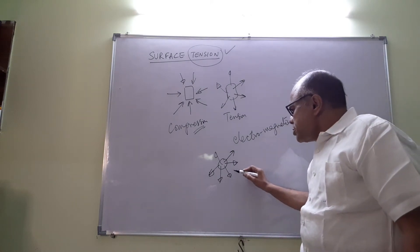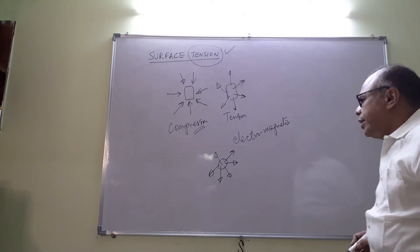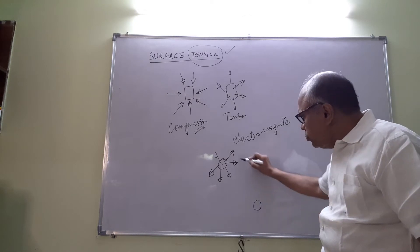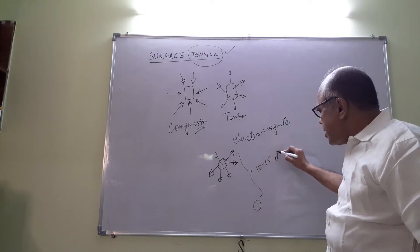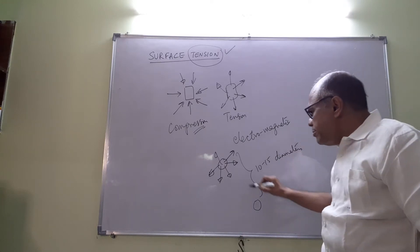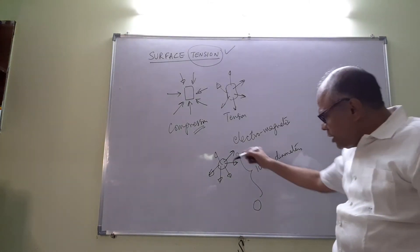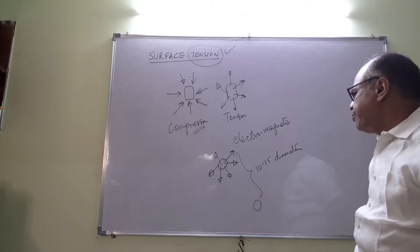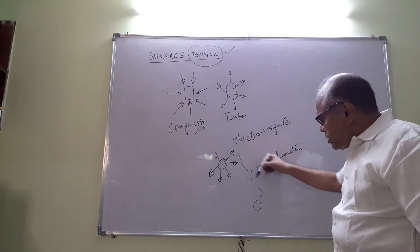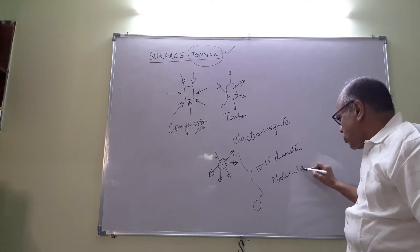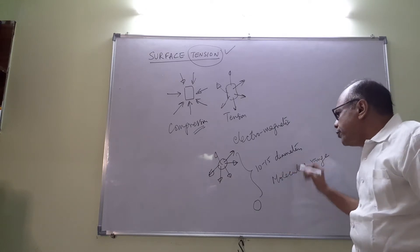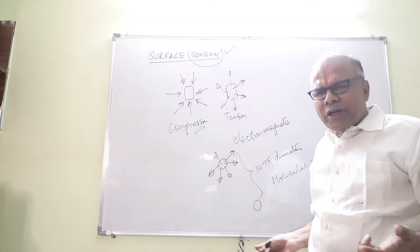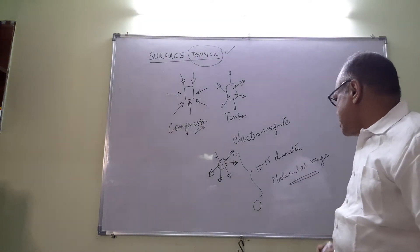Now, the question is: will a molecule very far away be able to attract this one? Obviously not. So there is a certain range. A molecule which is around 10–15 molecular diameters away will be able to exert a force. By Newton's third law, this molecule will also exert a force on nearby molecules. This is known as the molecular range — about 10–15 diameters. Beyond that there is some force, but it is negligible.